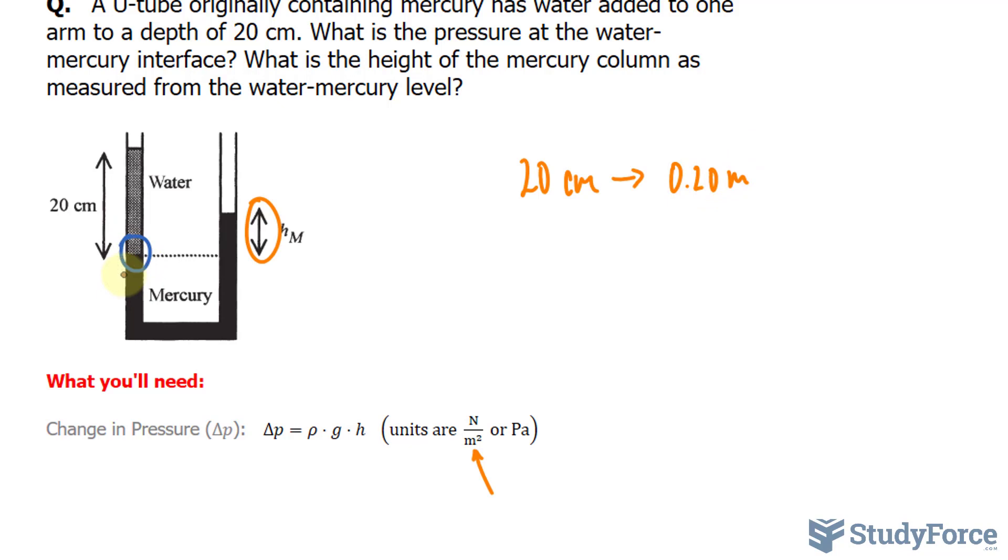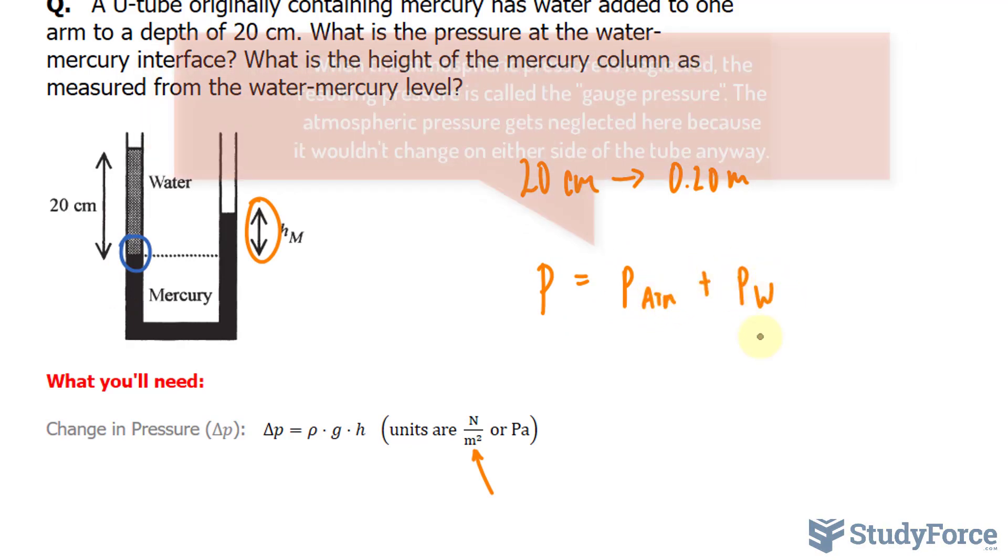All right, so the pressure here is the combined pressure of the atmosphere plus the pressure of the water itself. So I'll say pressure is equal to the pressure of the atmosphere plus the pressure of the water.